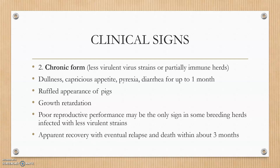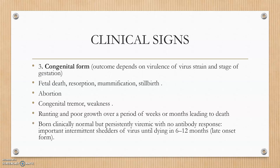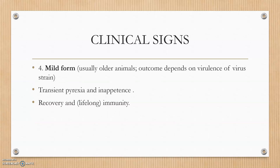Pigs huddle together. In the chronic form, there is a ruffled appearance and growth retardation; the virus is less virulent and the immune response is partially protective. The congenital form involves abortion, mummification, and stillbirth — the SMEDI syndrome (stillbirth, mummification, embryonic death, infertility) occurs in this form, and latency is sometimes exhibited. In the mild form, there is transient pyrexia and loss of appetite, but pigs can recover completely and develop lifelong immunity.